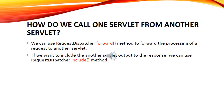How do we call one servlet from another servlet? We can use the RequestDispatcher forward() method to forward the processing of a request to another servlet. If we want to include another servlet's output in the response, we can use the RequestDispatcher include() method.